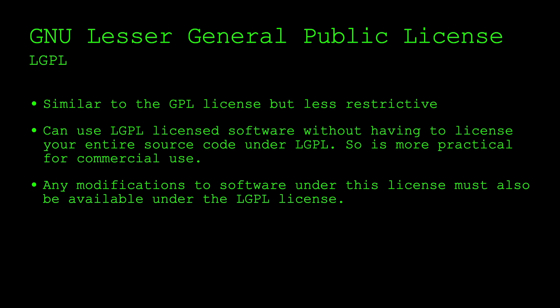The Lesser General Public License, or LGPL, is very similar to the GPL but less restrictive, so it's a little more commonly used commercially. You can use LGPL-licensed software without having to license your entire source code under LGPL, which is why it's more practically used in commercial software. However, if you make any modifications to software licensed under LGPL, you must also make those modifications available under the LGPL license.